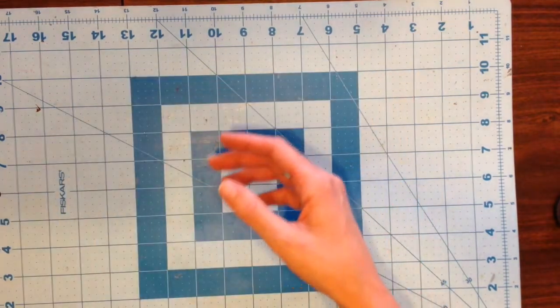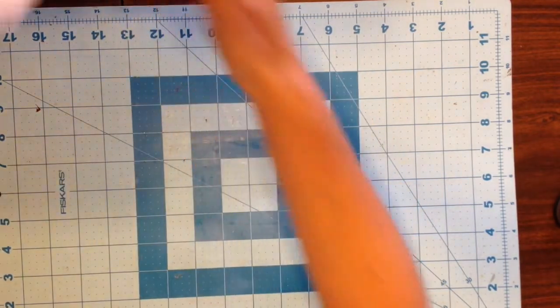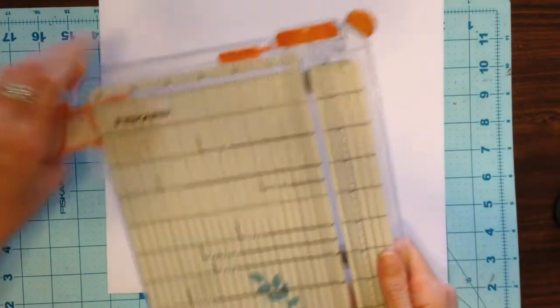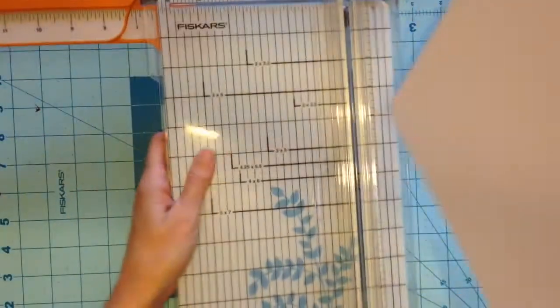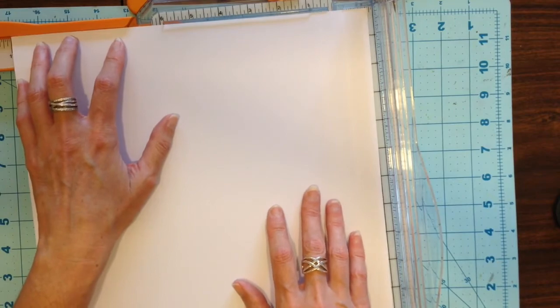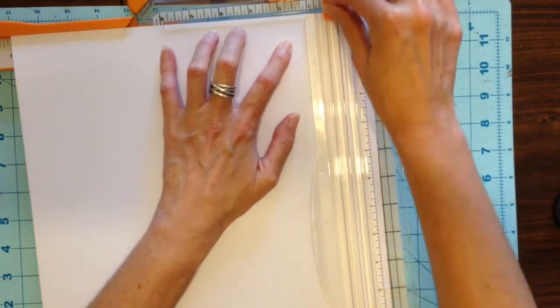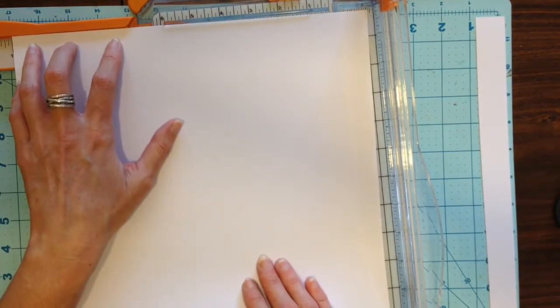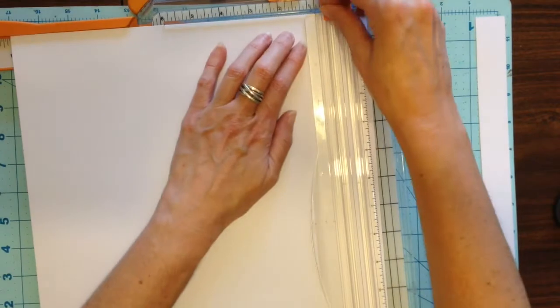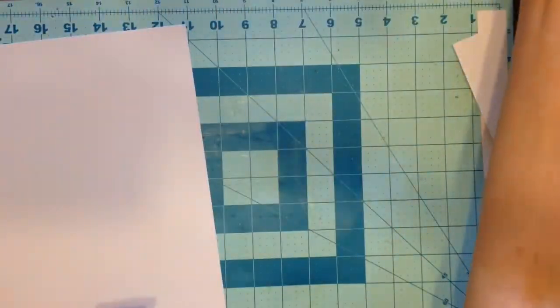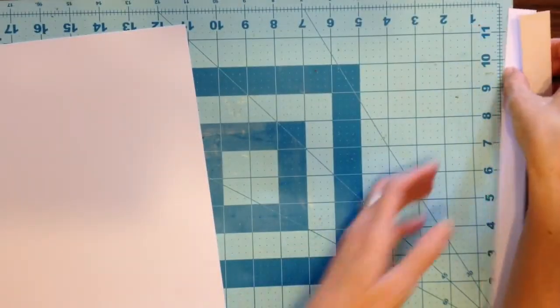To begin with you will need a 12 by 12 piece of cardstock and you'll need to trim it so that it measures 11 inches. On your paper trimmer, trim your first side to 11 inches, rotate it once and again mark it and measure it at 11 inches. Now you will need your Martha Stewart scoreboard for the next step.